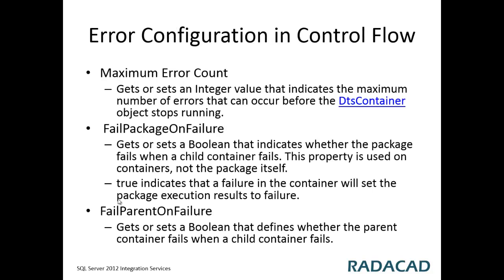There is also some error configuration in the control flow. There are three main properties for error configuration. The first one is maximum error count, which is an integer value representing the maximum number of errors that can occur while running the package. If we expect around 5 or 10 errors that we can handle, we set that maximum error count accordingly. Then there is fail package on failure and fail parent on failure.